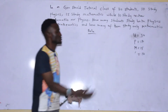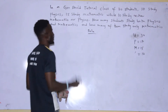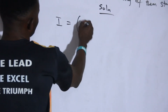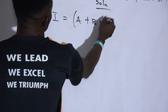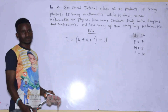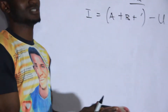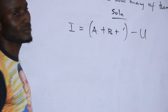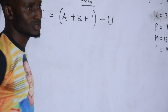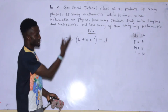Now, how am I going to use the formula to solve this? I am going to introduce the formula that says: I equals, in brackets, A plus B plus the complement, minus the universal set. The I is the intersection — those that study both. A means the first set, B means the second set, the complement means those that do not study at all, and U means the universal set.